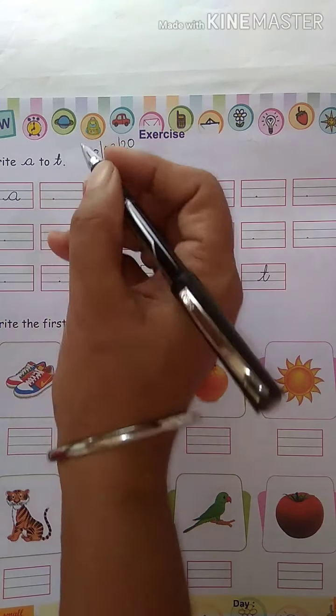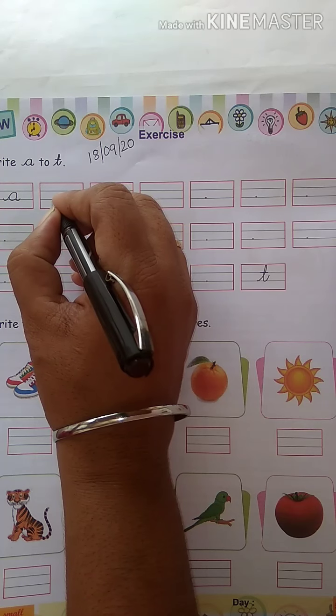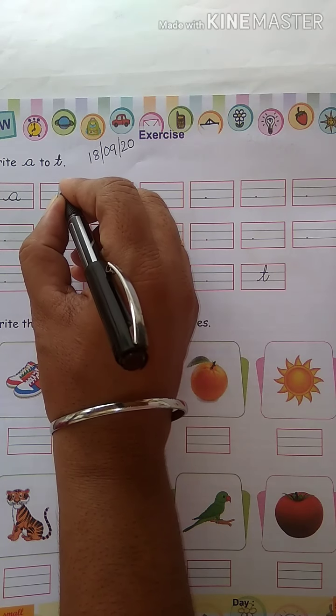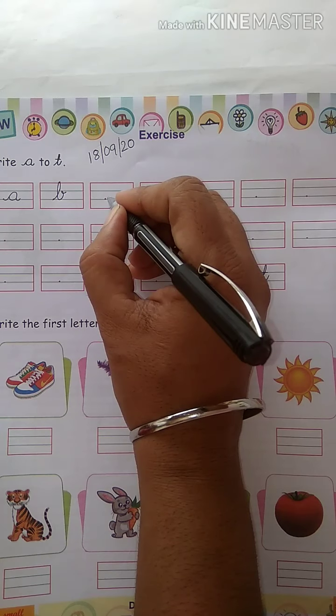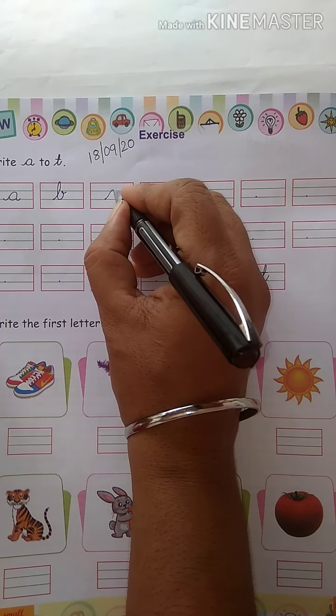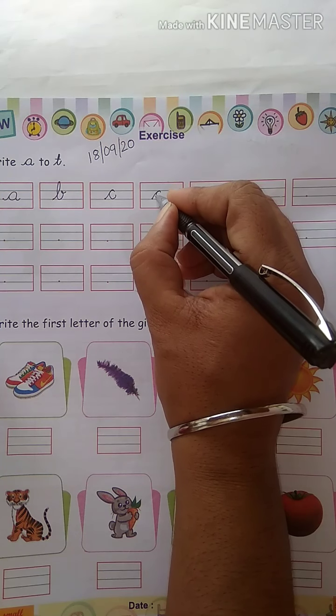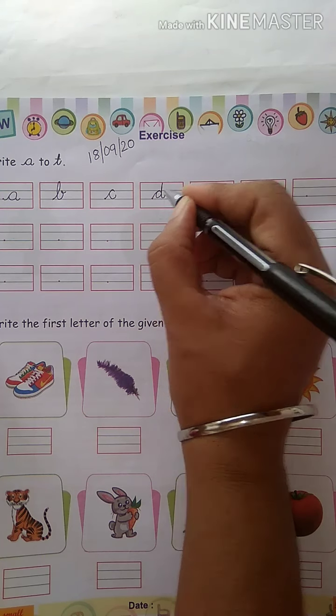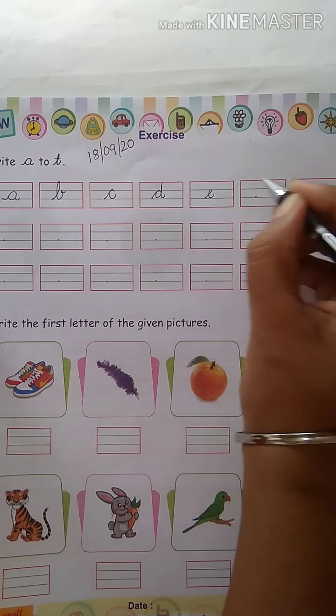I have A to T. Click A. A car. After B. After C. D. E. F.